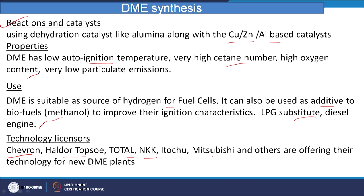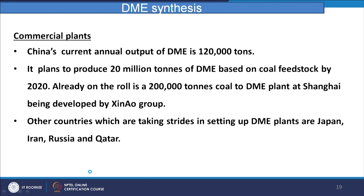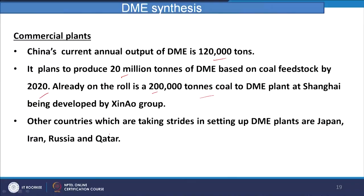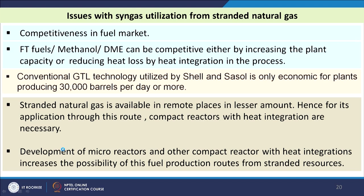Some examples of DME plants: China is the leader of DME synthesis. China's current annual output of DME is 120,000 tons, and it plans to produce 20 million tons of DME based on coal feedstocks by 2020. A 2,000,000-ton coal-to-DME plant is already operating in Shanghai. Natural gas can also be processed similarly — natural gas to syngas to DME. Other countries taking strides in setting up DME plants include Japan, Iran, Russia, and Qatar.